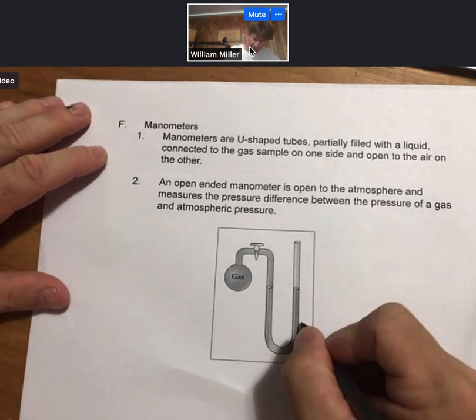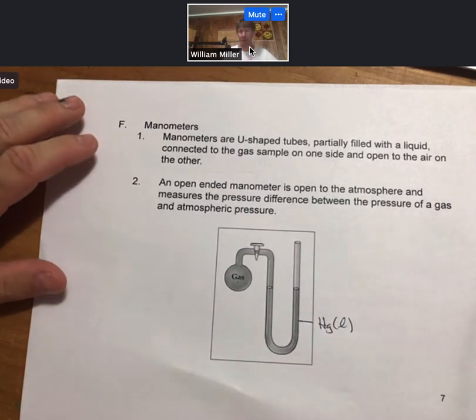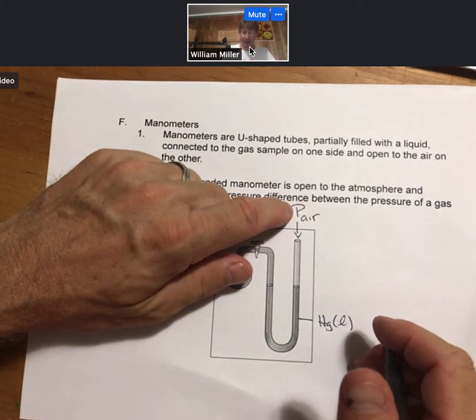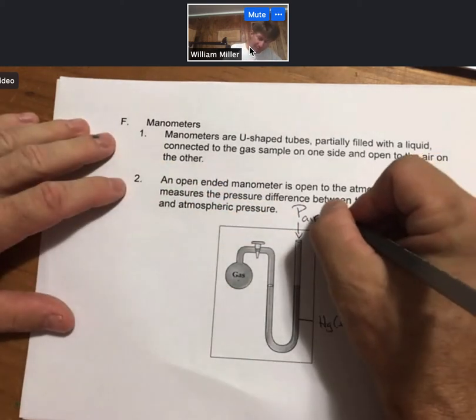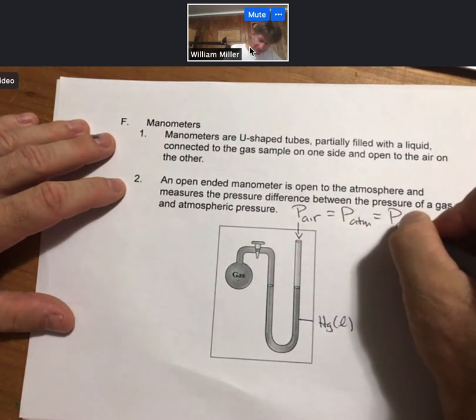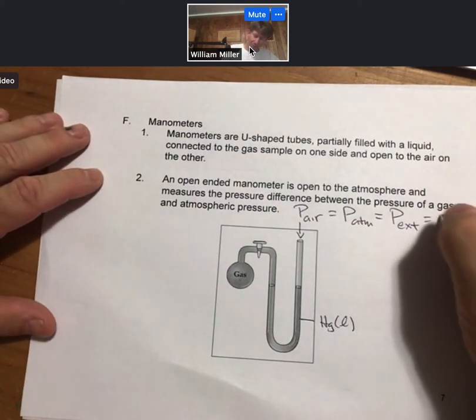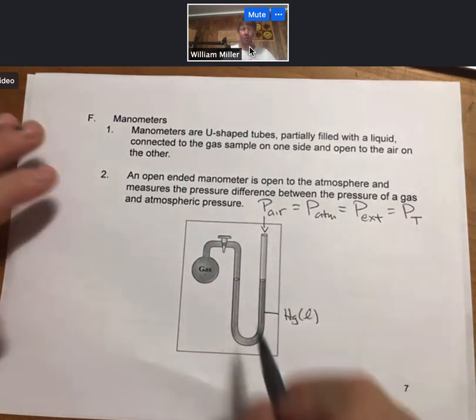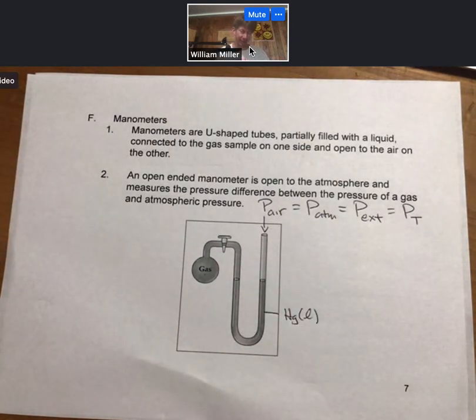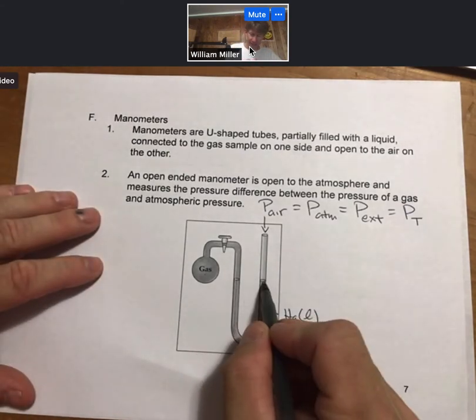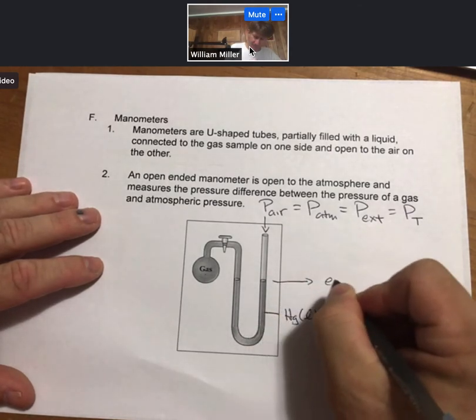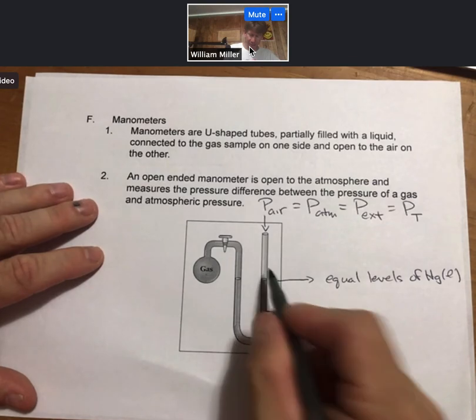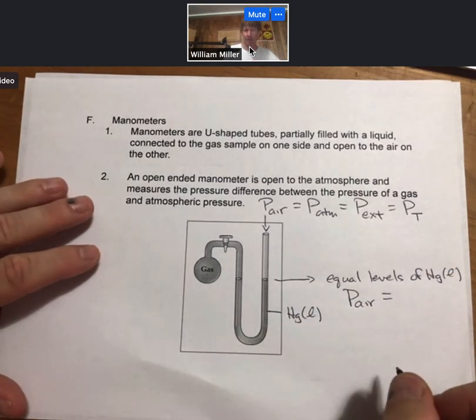So I'm showing an open-ended manometer, and the gas is going to be mercury. And the pressure here is a capital P, and it is of the air pressure or the atmospheric pressure. And it is also sometimes referred to as the external pressure or total pressure. So there's lots of ways for designating pressure right there. But it's the air pressure. And what you can do is, with a barometer, you can measure the air pressure or the atmospheric pressure. And if the gas and the air have equal levels of mercury, then what we can say is that the pressure of the air equals the pressure of the gas.